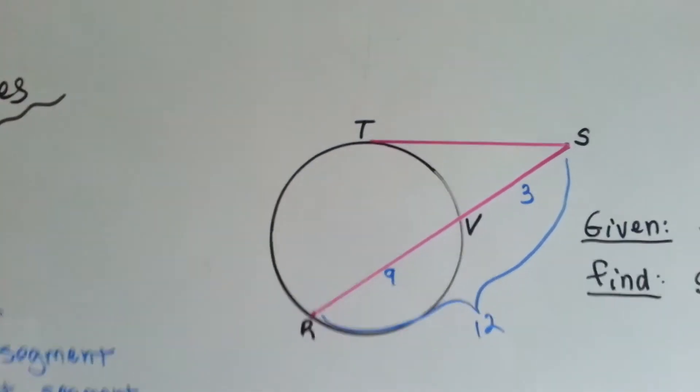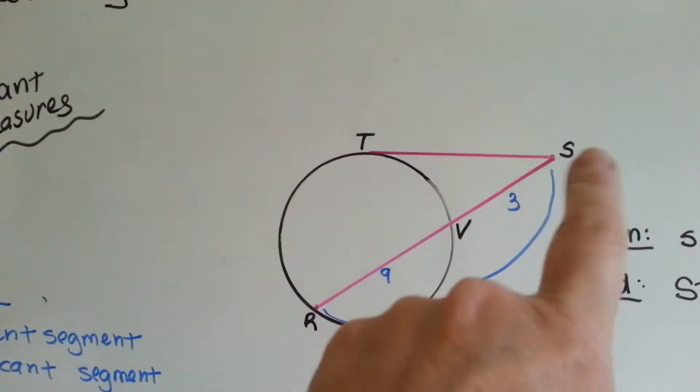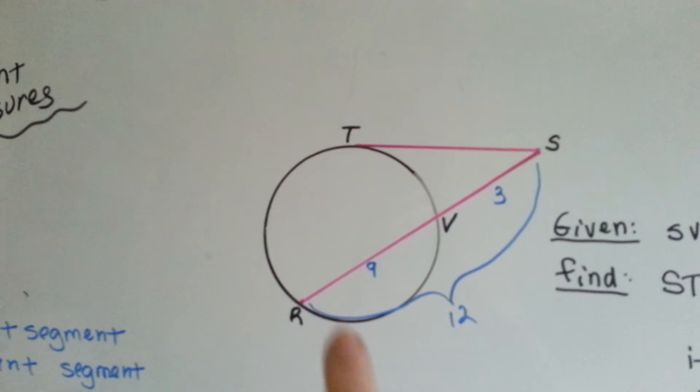Look at this drawing we have here. Here's our tangent, and here's our secant, and they're segments. Because they stop at the point of the circle.